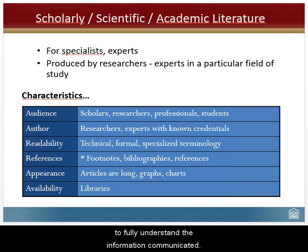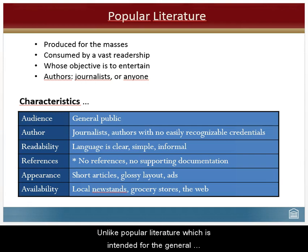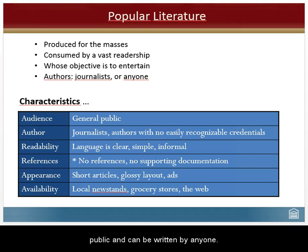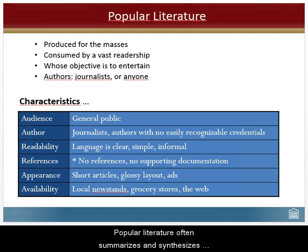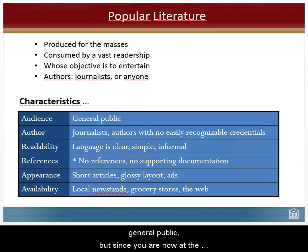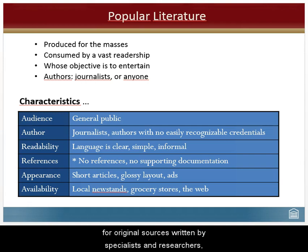Unlike popular literature, which is intended for the general public and can be written by anyone, popular literature often summarizes and synthesizes scientific information in order to make it accessible to the general public. But since you are now at the university, you are expected to search for original sources written by specialists and researchers, which means scientific sources.